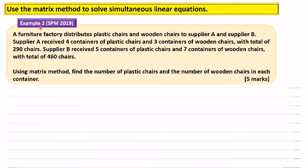Example 2 is a past-year question from SPM 2019. A furniture factory distributes plastic chairs and wooden chairs to supplier A and supplier B. Supplier A received 4 containers of plastic chairs and 3 containers of wooden chairs with a total of 290 chairs. Supplier B received 5 containers of plastic chairs and 7 containers of wooden chairs with a total of 460 chairs. Using the matrix method, find the number of plastic chairs and wooden chairs in each container.